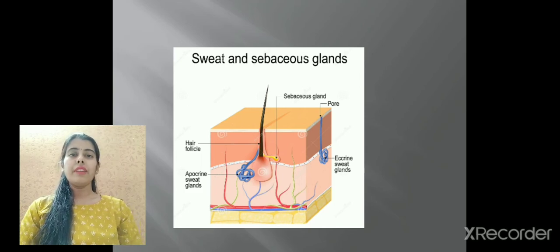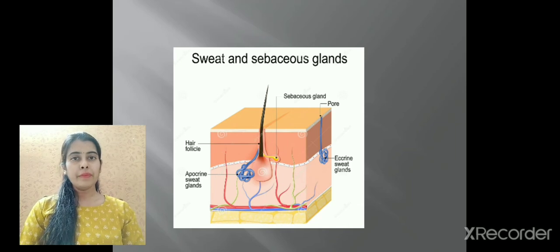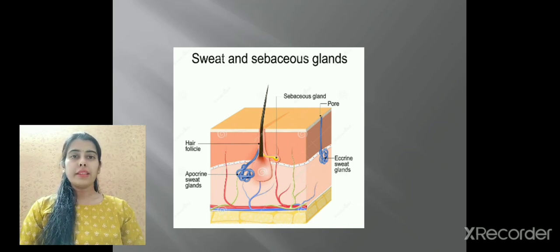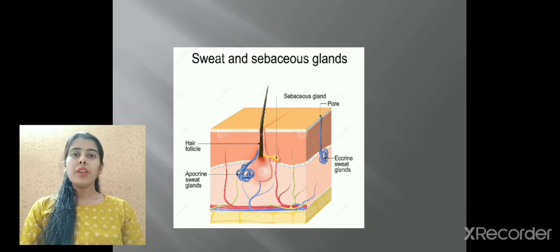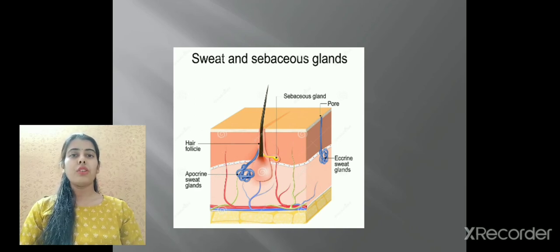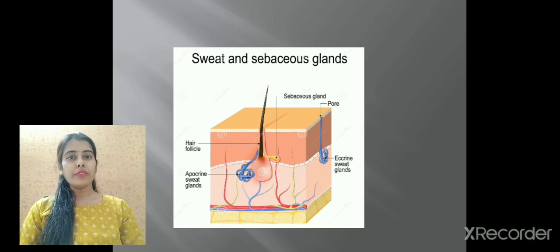Today we have learned about how excretion occurs in human beings, and how the urinary system helps eliminate waste products. Accumulation of toxic materials in the body can be harmful and cause many diseases. In the human body we have three modes of excretion: one is lungs, second is the urinary system (the kidneys), and third is the sweat glands.